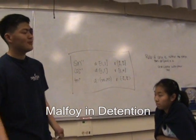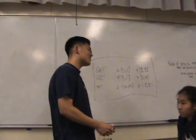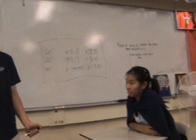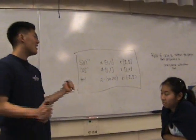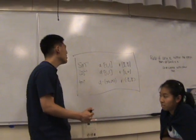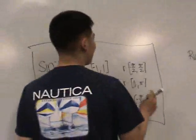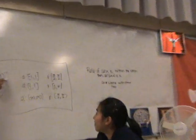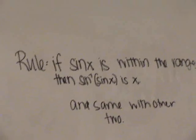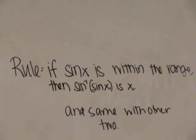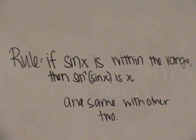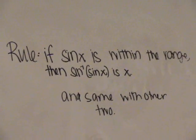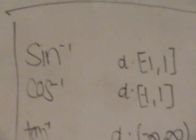Now, Malfoy, since you've been being so terrible in my classes recently, I think you deserve to be punished WITH INVERSES! Now, the rule is, if sine x is within the range of sine inverse x, then sine inverse of sine x equals x. This is true for the other two functions.